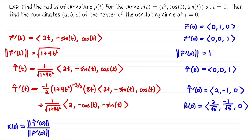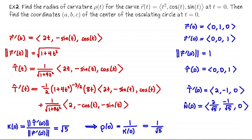We need the curvature to compute the radius of the osculating circle. The curvature at t equals 0 is the length of T-hat prime divided by the speed, which gives √5. That tells us the radius of curvature is 1 over the curvature, so 1/√5.